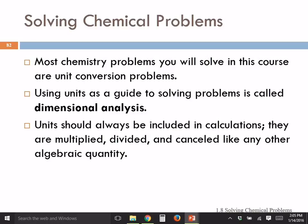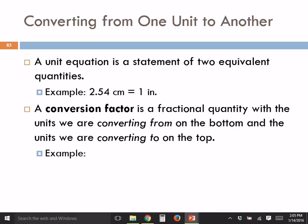Units are like variables in algebra — X's, Y's, A's, and B's. They can be multiplied and divided, and they can cancel each other out. When we're converting units, we use a unit equation, an equivalent statement, or a conversion factor. For example, 2.54 centimeters equals one inch — that's one I want you to memorize.